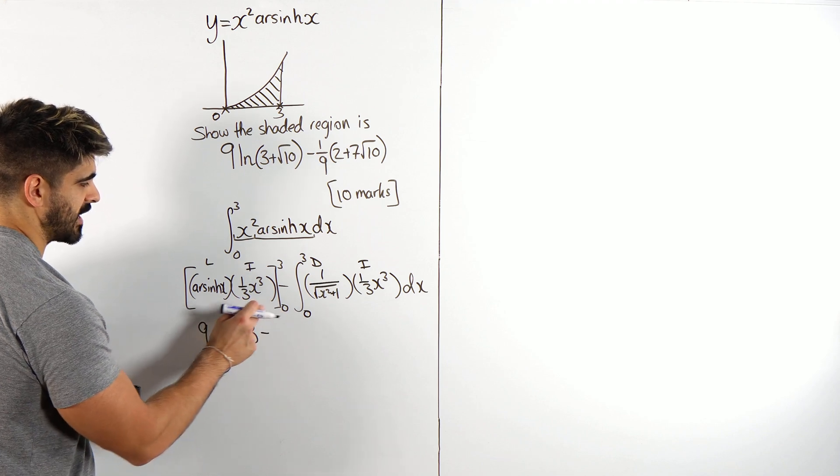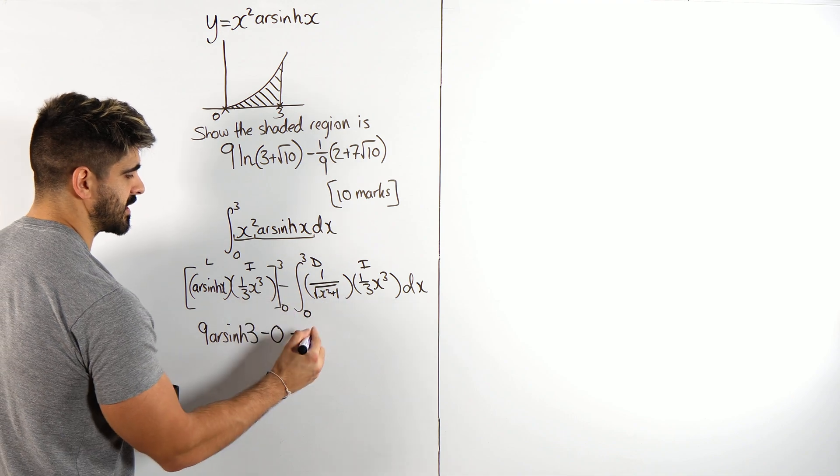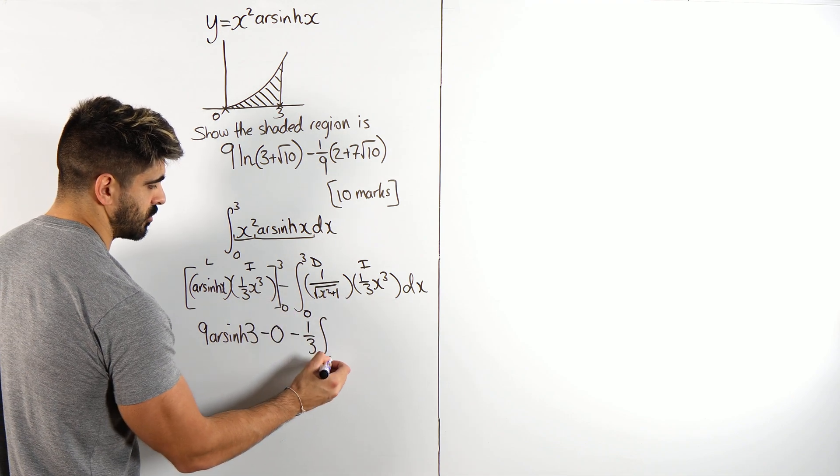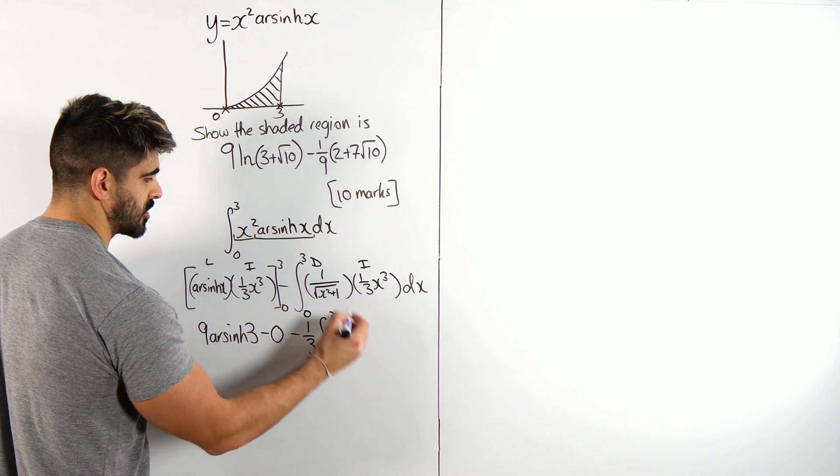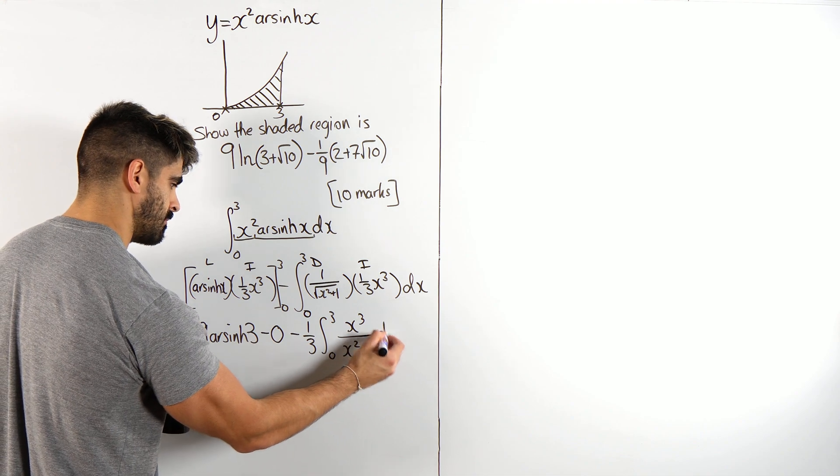Yeah. Minus, subbing in 0, actually, when you sub in 0 into there, you just get 0, okay? Minus, this third, I'm going to take out. Integral between 0 and 3. That X cubed, I'm going to write on the top. Okay.